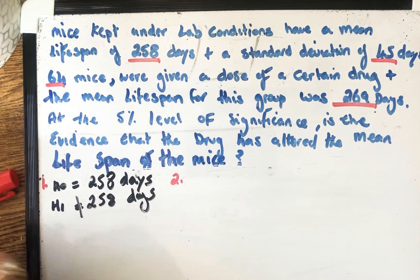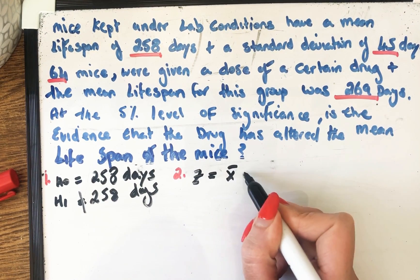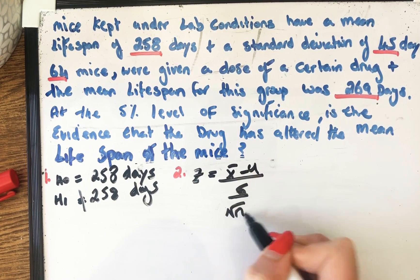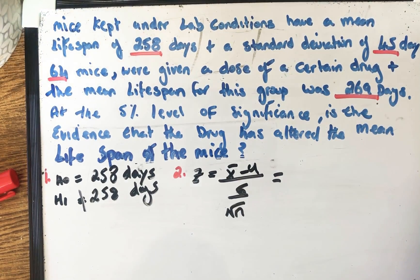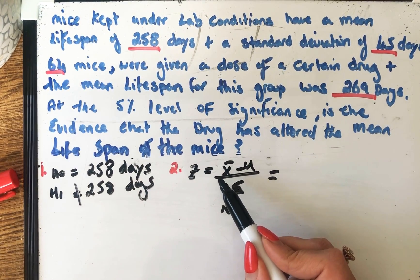So Z is equal to X bar minus mu over sigma all over root N. Now I know this off, but again, it's in the log tables. So our X bar is our sample mean.